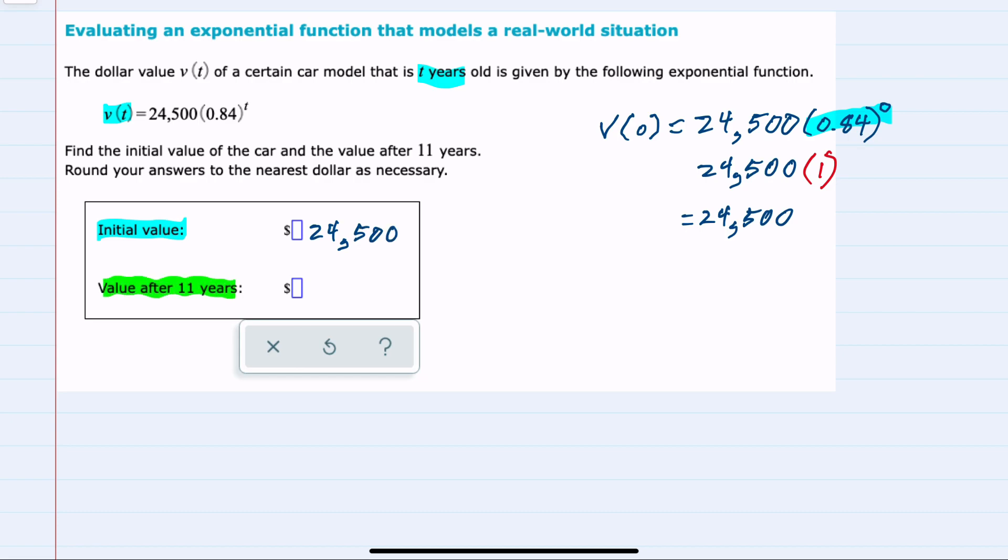And then to find the value after 11 years, we would replace t with 11, giving us 24,500 times 0.84 to the 11th power. And we're rounding to the nearest dollar, if necessary.